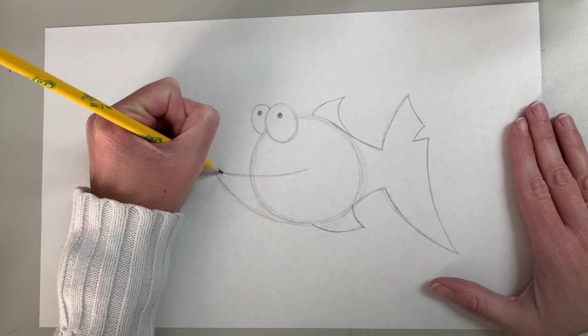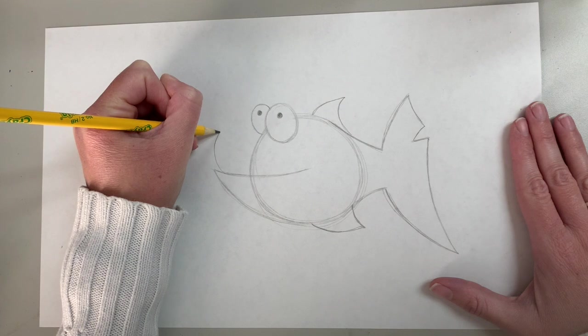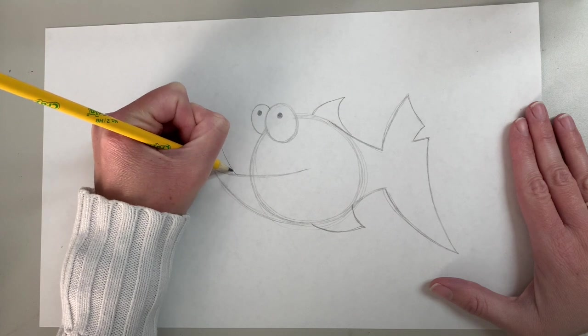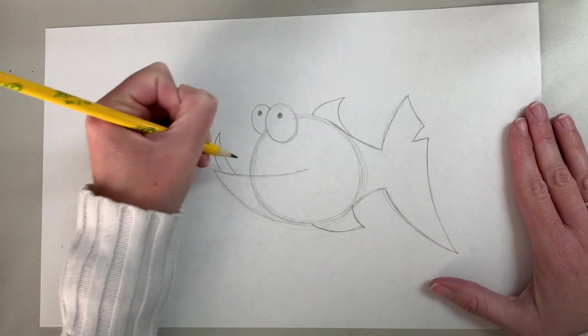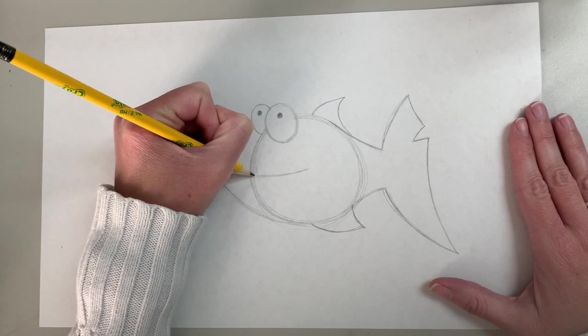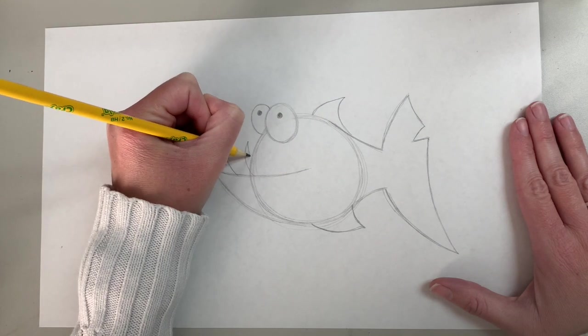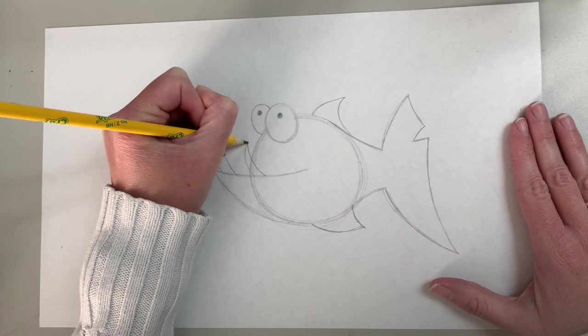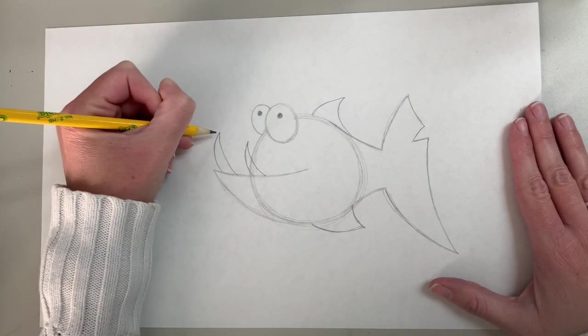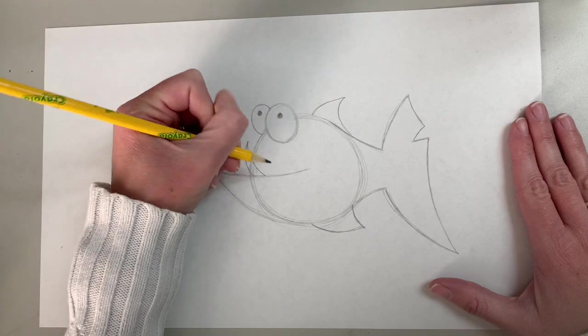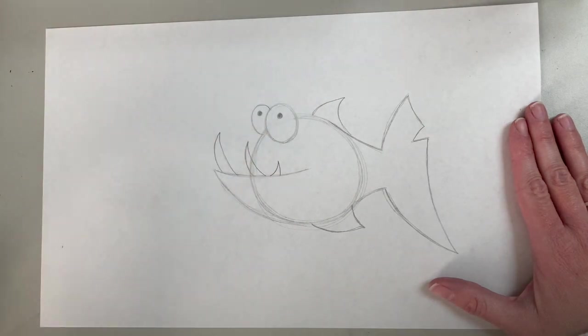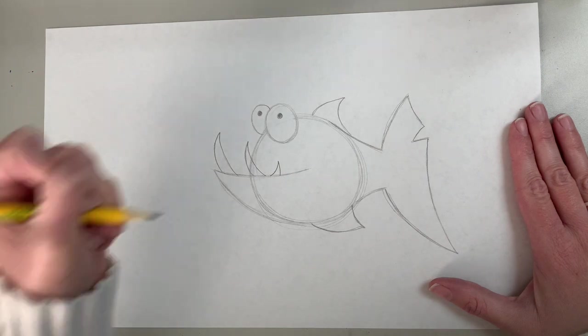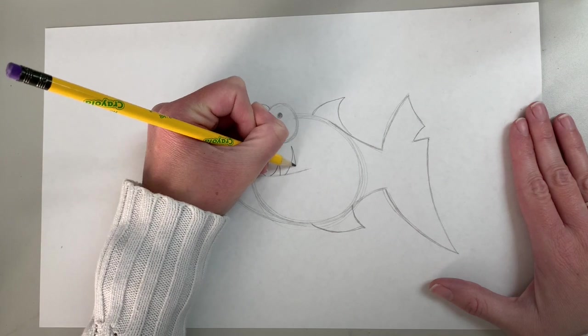So he's going to come up here, our first big tooth and come down and connect. Then we're going to have another tooth come here, up and connect back down. Nice sharp points here. We're going to have a little tooth that comes up, just a little tooth. Then we're going to have another bigger tooth here.